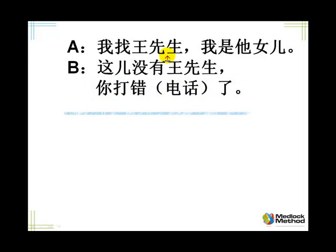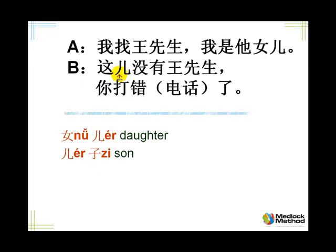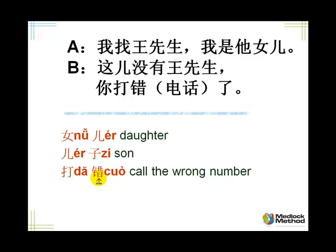我找王先生 — I'm looking for, I'm after 王先生。 我是他女儿 — 女 is girl and 儿 means child, so girl child is daughter. And son would be 儿子. 这儿没有王先生 — we usually have a location in front. 这儿 here. That's the opposite way around to English: Chinese says here there isn't Mr. Wang. 你打错了 — 打错, call wrongly. 错 means mistake. If you made a mistake, you'd say 对不起，我打错了, or 我打错电话了.